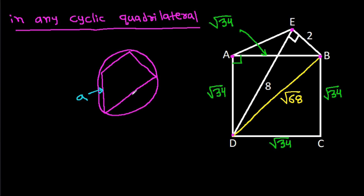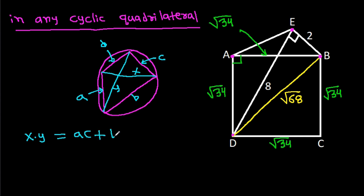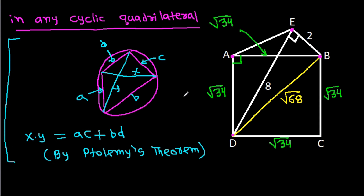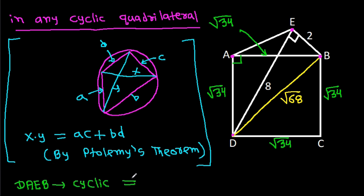For a cyclic quadrilateral with sides A, B, C, D and diagonals X and Y, X times Y equals the sum of products of opposite sides — this is Ptolemy's theorem. So here, since DAEB is cyclic, DE times AB will be equal to DA times BE plus DB times AE.